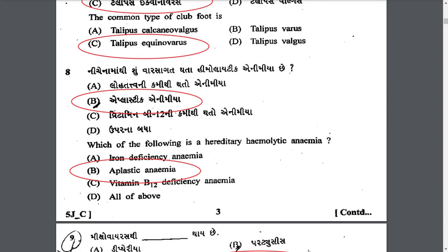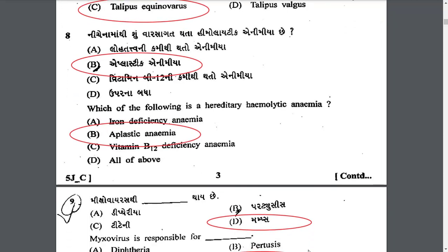Which of the following is a hereditary hemolytic anemia? The answer is aplastic anemia. In aplastic anemia, RBC, WBC, and platelet counts all decrease — so there will be decreased RBC, WBC and platelet count in aplastic anemia.